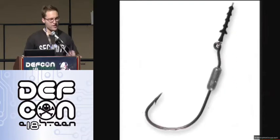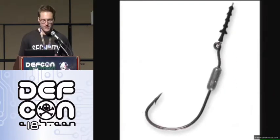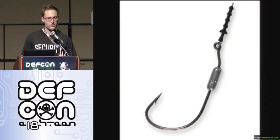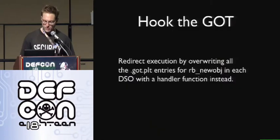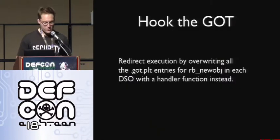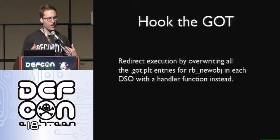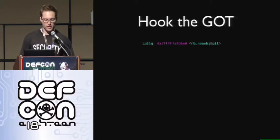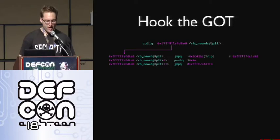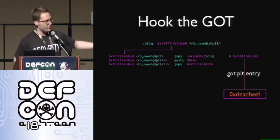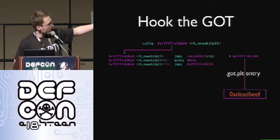So hooking that is actually really easy — we can just pretend that we're the dynamic linker and go around poisoning other people's global offset table entries. We just redirect execution by cruising around finding other people's PLT entries and overwriting them with the address that we care about. For example, if you have a call to rb_new_object, you just overwrite the GOT table entry so it points to your handler instead.